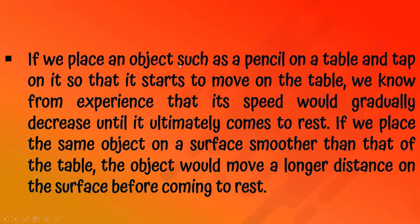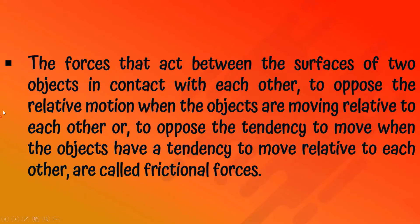If we place an object such as a pencil on a table and tap on it so that it starts to move on the table, we know from experience that its speed would gradually decrease until it ultimately comes to rest. If we place the same object on a surface smoother than that of the table, the object would move a longer distance before coming to rest.